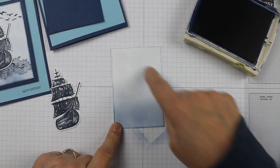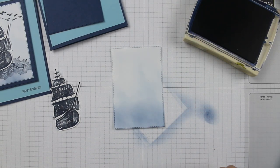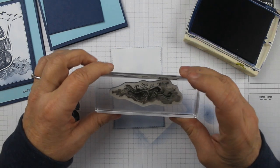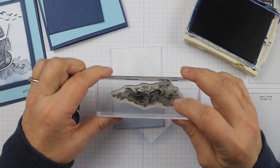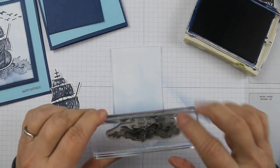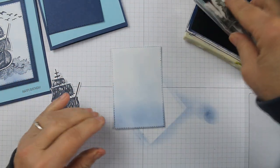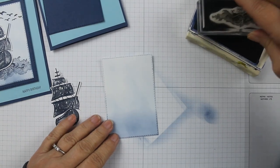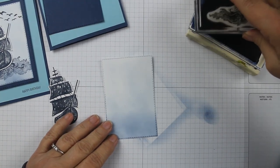Then you're going to take the stamp from On the Ocean - the waves one - and I'm going to ink it up in Night of Navy. This thing stamps so incredibly beautifully. So I'm going to ink it up real good.